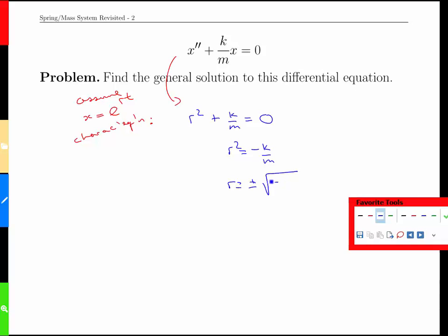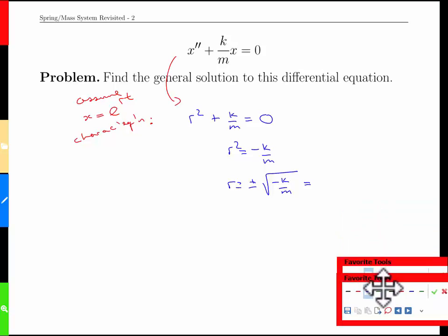Solving for r we get r squared is negative k over m, or r is equal to plus or minus square root of negative k over m. Well let's factor that out, we're going to get one of those complex root scenarios.